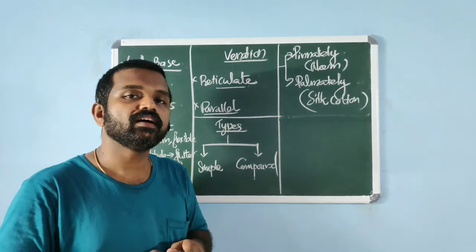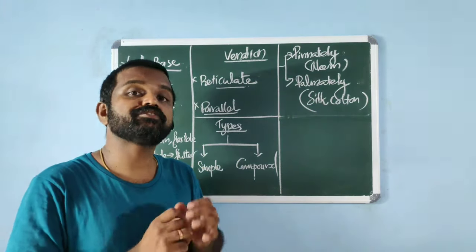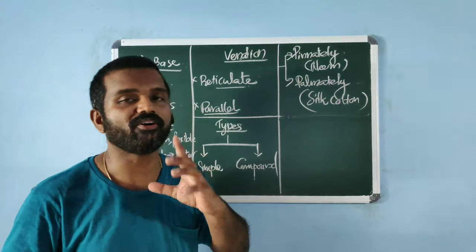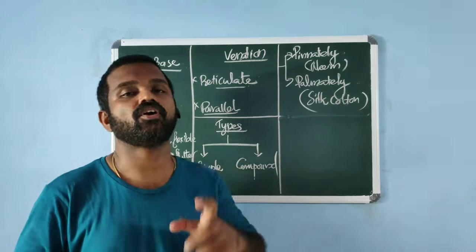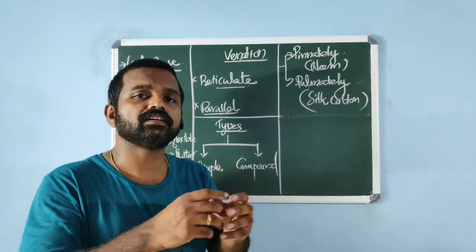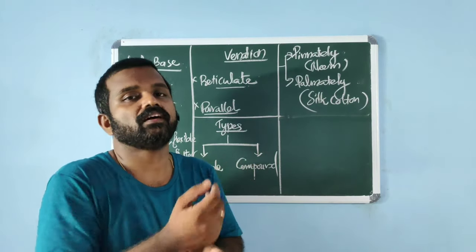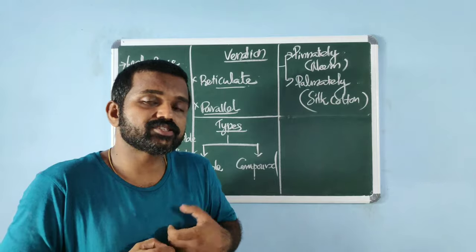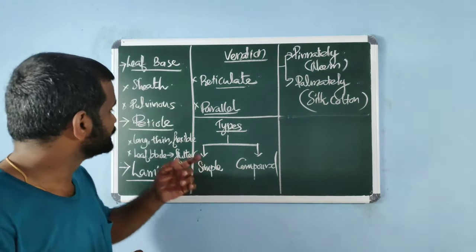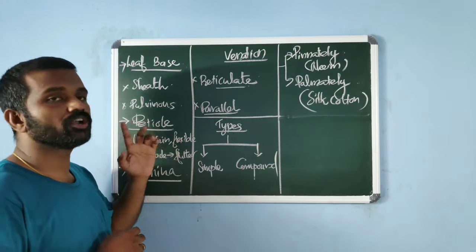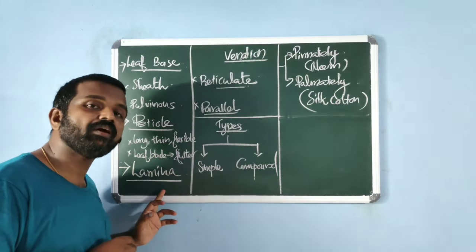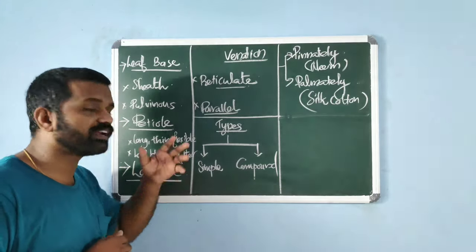A sheathed leaf base is seen in monocots. The petiole is the stalk of the leaf — the long, thin, flexible petiole allows the leaf blade or lamina to flutter in the wind, which cools the leaf and brings fresh air to the leaf surfaces.